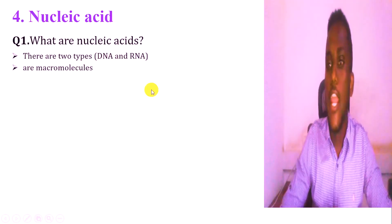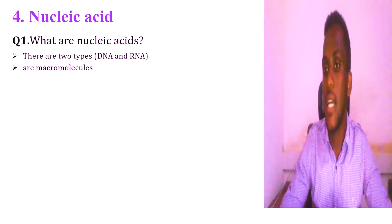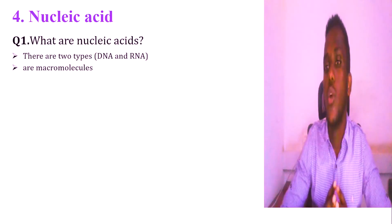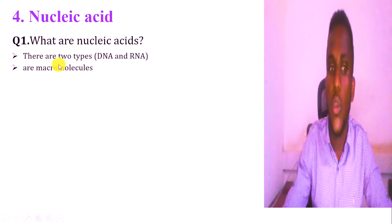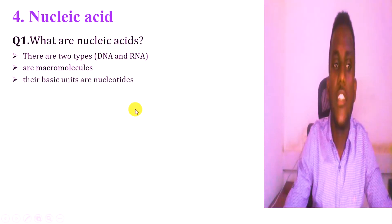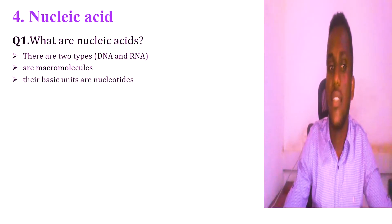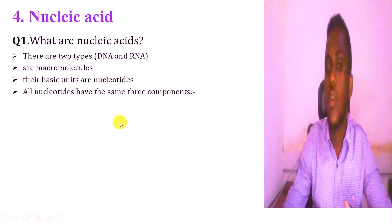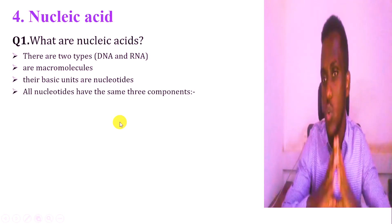So DNA and RNA are macromolecules, which means that they are large molecules — polysaccharides — composed of small molecules. The building blocks or the basic units of nucleic acids are nucleotides.